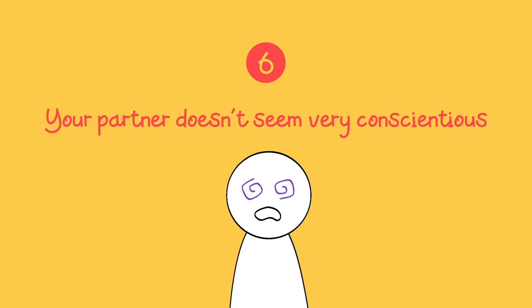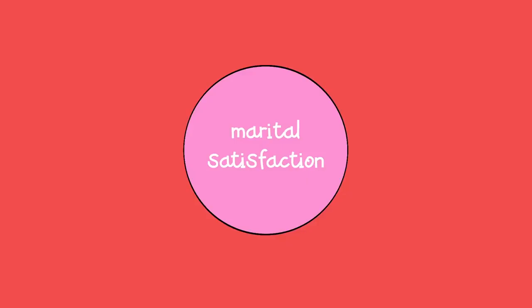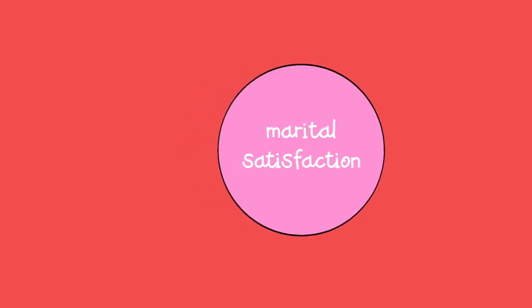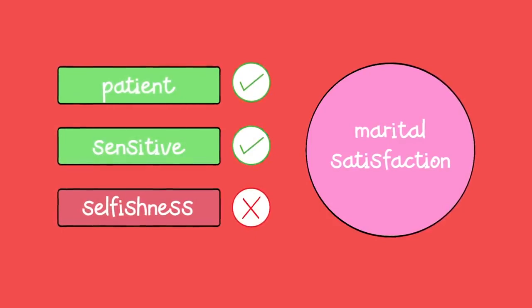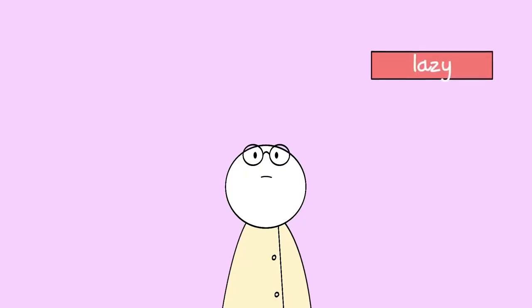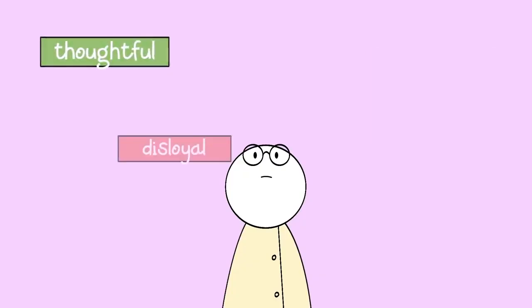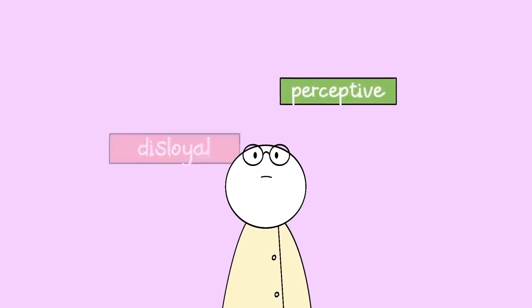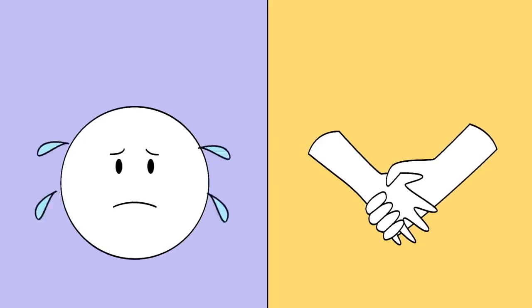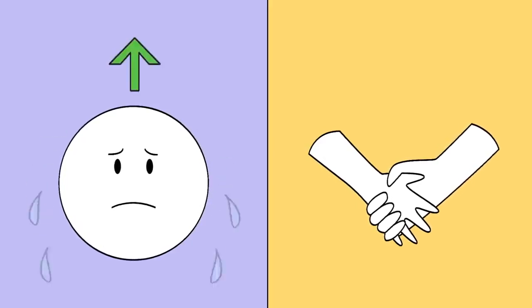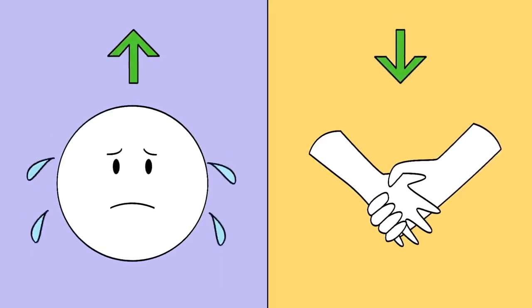Six, your partner doesn't seem very conscientious. A 2004 study published by the Journal of Family Psychology attempted to link certain personality traits with marital satisfaction. Researchers found a connection between a number of personality traits and unsatisfied couples. And one trait was lowered conscientiousness. Additional traits linked with dissatisfaction included high neuroticism and lowered agreeableness.